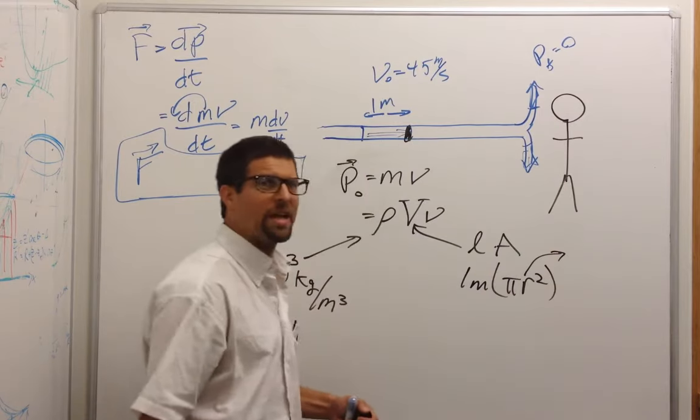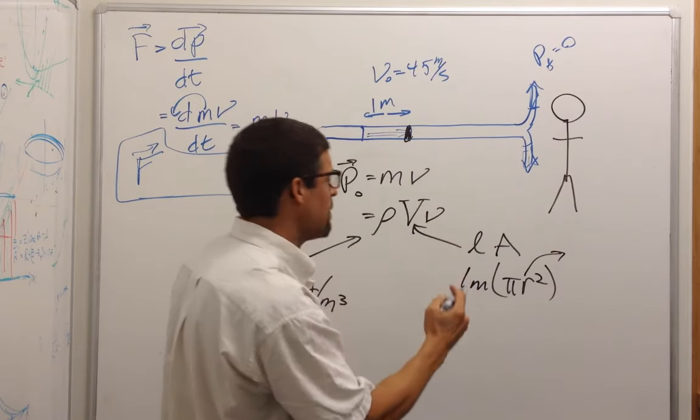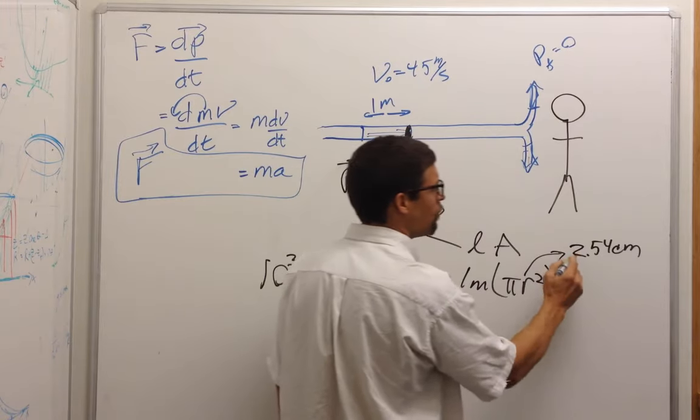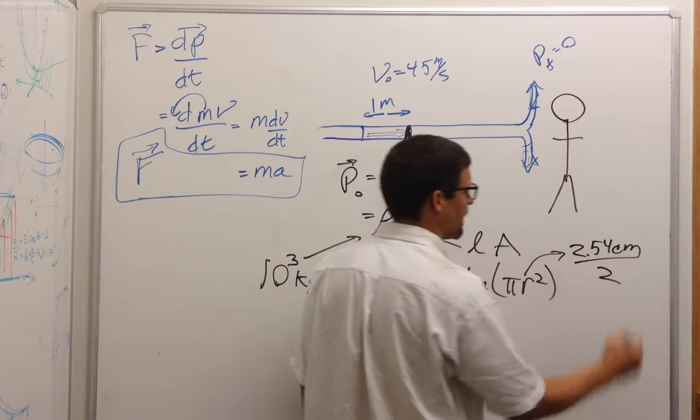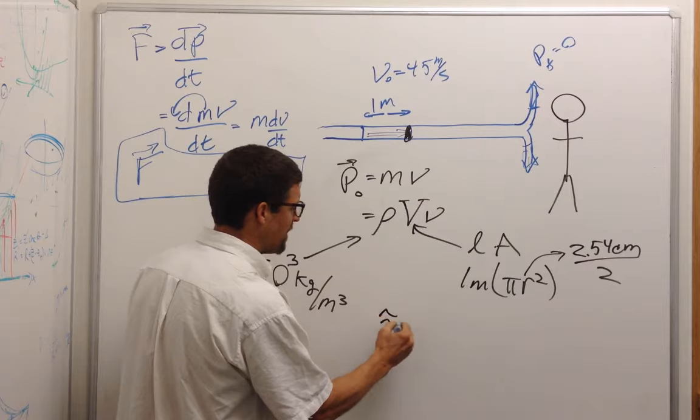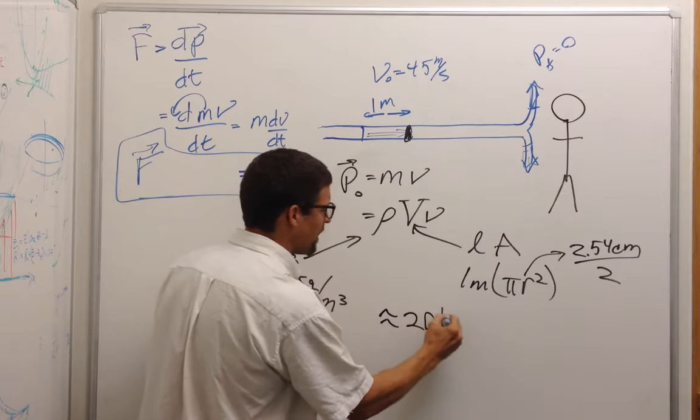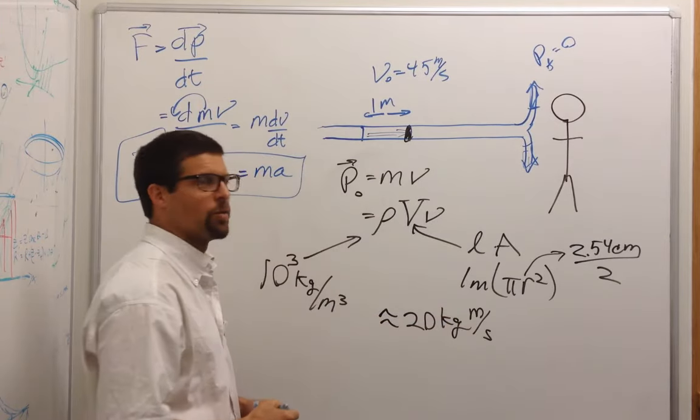And what is the radius? I said it was one inch in diameter, I think. So the radius is 2.54 centimeters divided by 2. The answer comes out to be on the order of 20 kilogram meters per second when you work it out. This is your initial momentum.